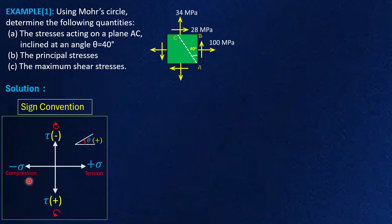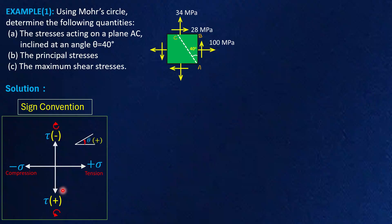Please remember: tensile stresses are taken as positive while compressive normal stresses are taken as negative. Similarly, clockwise shear stresses are taken as negative and plotted in the upward direction, while anti-clockwise shear stresses are plotted in the downward direction and considered positive. If you follow this sign convention it will be very simple to find out values with the help of Mohr's diagram.